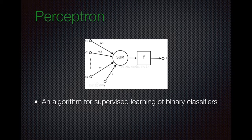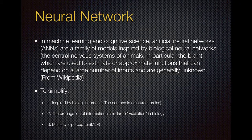First, let me introduce the perceptron algorithm, which is a simple supervised learning algorithm for binary classification. Because it's too simple, its function is limited. Then, inspired by perceptron, we have a new algorithm called a neural network — an algorithm based on biological neural networks and simulated in a computer. For each layer of neural networks, it consists of numbers of neurons, and neurons in different layers are connected with each other.